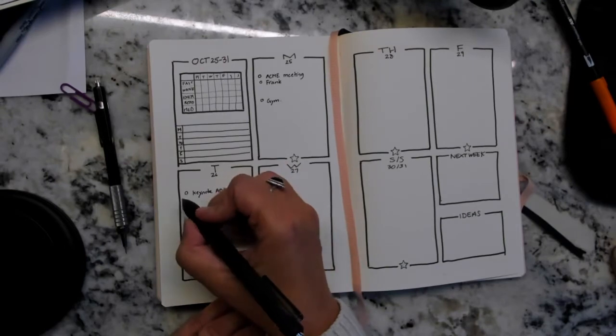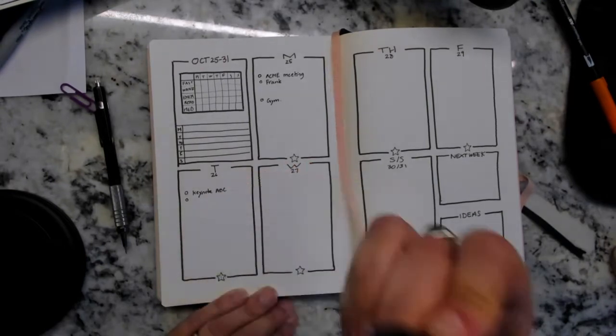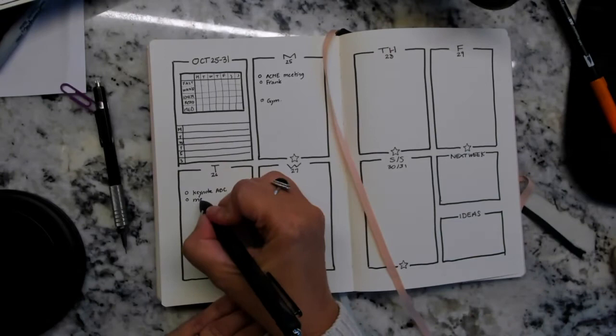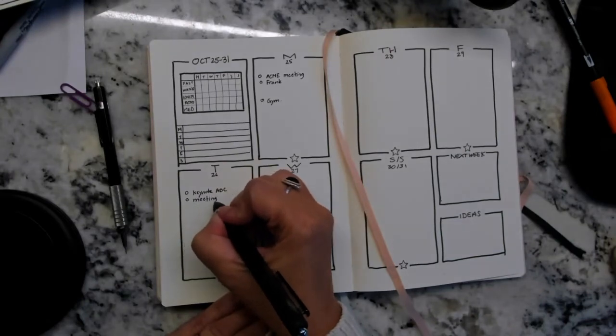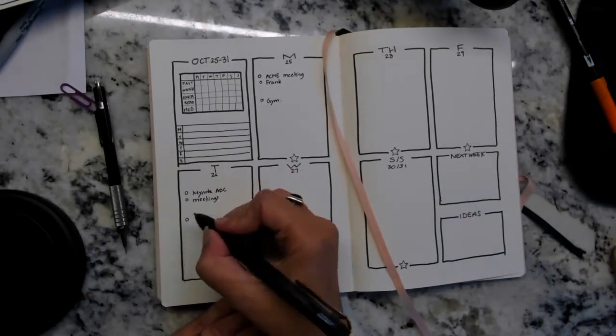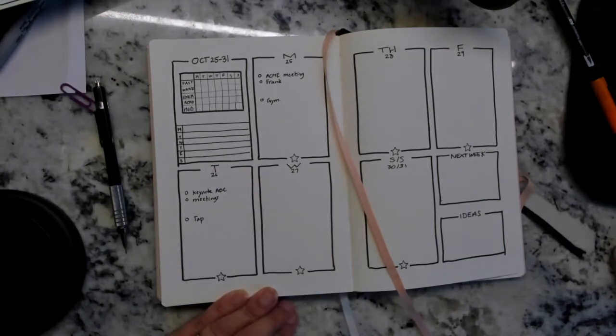On Tuesday, I might have a keynote for a given client. I might also have - whatever. I'm just going to put in all of the meetings that I have, all of the appointments that are in my calendar. And what I do know is I have on Tuesdays my tap class.